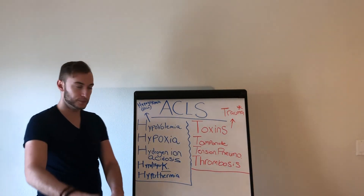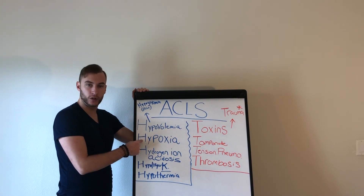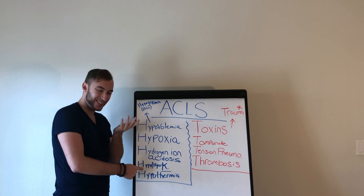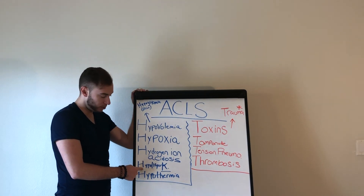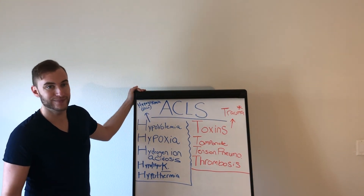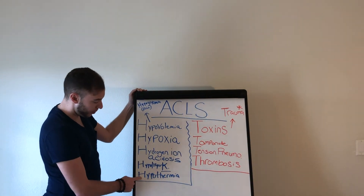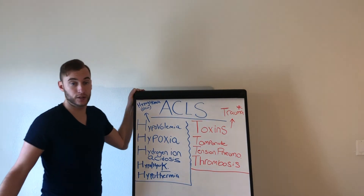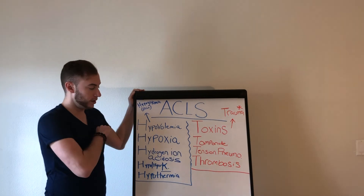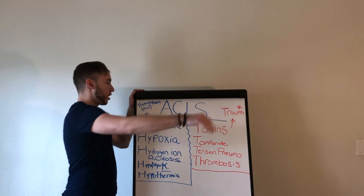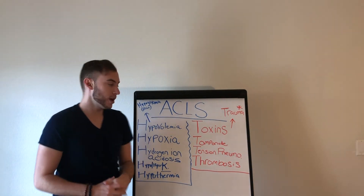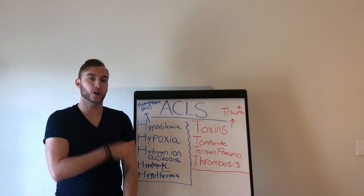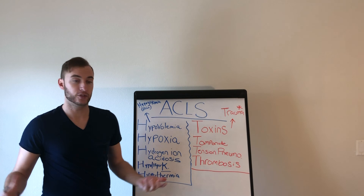So how do we fix all these things in the field? IV fluid for hypovolemia. Good airway and ventilation with oxygen for hypoxia. Sodium bicarb for acidosis. Hypo/hyperkalemia — we may carry some medications that can help, but it's mostly a hospital thing; be aware of it. Keep the patient warm for hypothermia. Use an antidote if there is one for toxins. Needle decompression for tension pneumo. Alert the hospital for thrombosis. Address trauma. Fix blood sugar for hypoglycemia. I'm keeping it basic because many of you are EMTs or just getting into paramedic school.